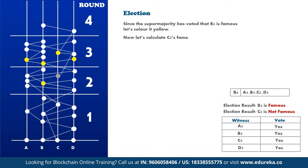Now let's run an election for whether C2 is famous or not. C2 is colored gray. C3 can see C2, so C3 votes yes, but there are no downward paths from A3, B3, or D3 to C2, so they all vote no. The votes are calculated by B4, which strongly sees A3, B3, C3, and D3 and collects their votes: no, no, yes, and no. The supermajority says no, and the consensus decision is that C2 is not a famous node. There is a theorem that if any witness is able to decide yes or no, that is the result, and all other witnesses that decide will decide the same way.